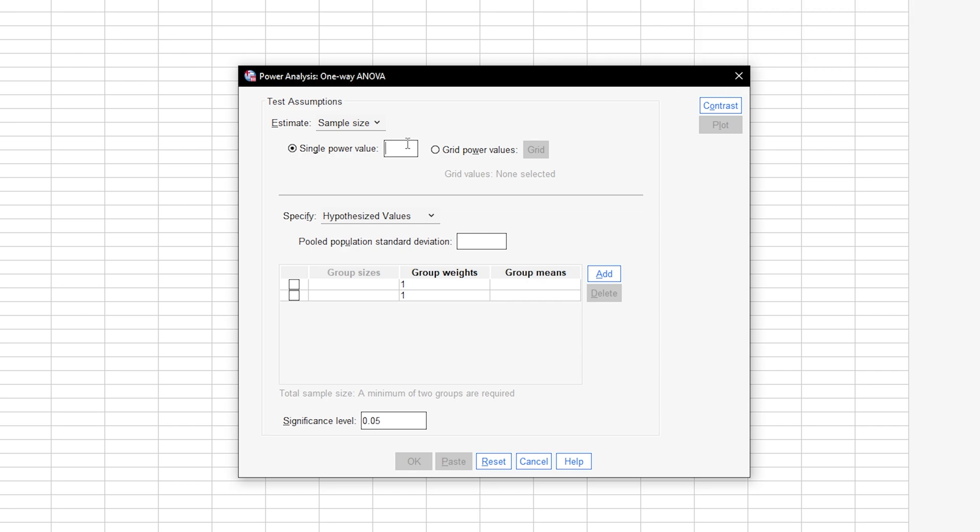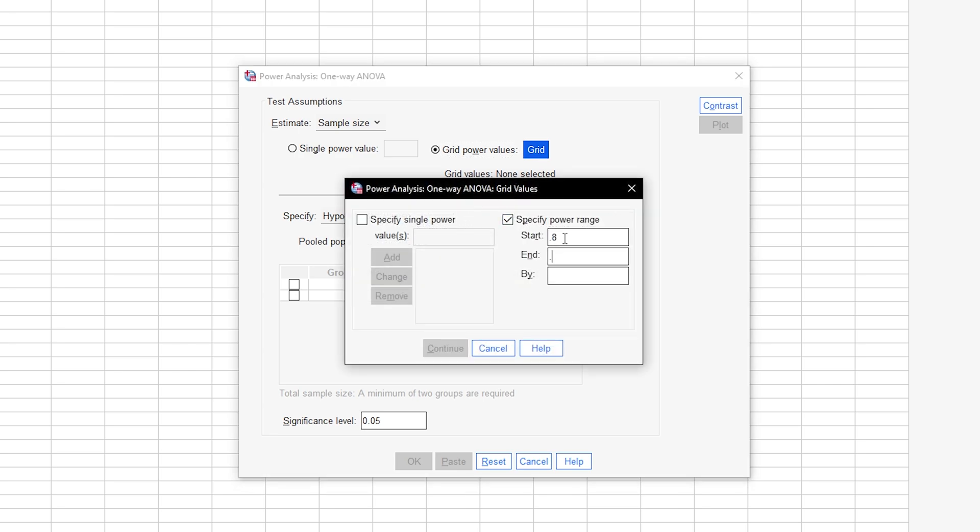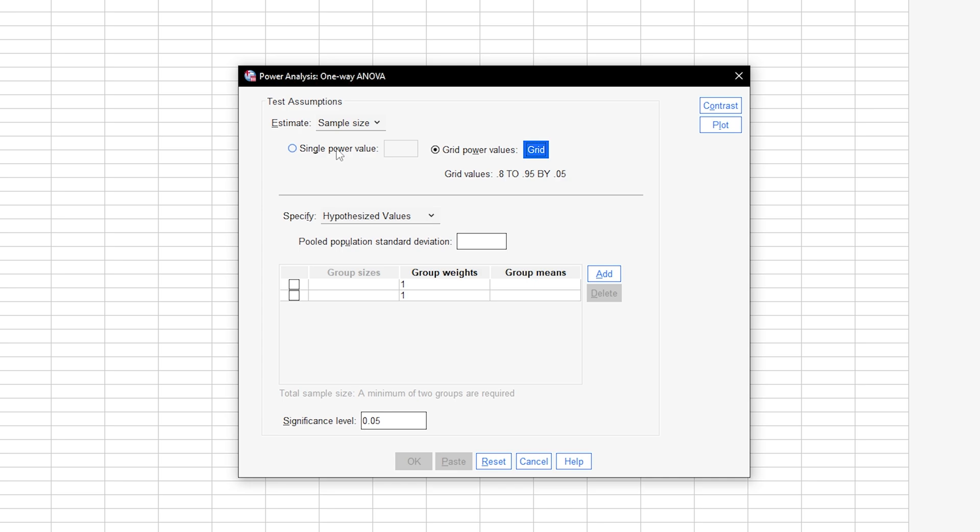If you want to calculate sample sizes based on multiple power values or even a range, let's say from 0.8 to 0.95 in 0.05 steps, you can define that here as well.